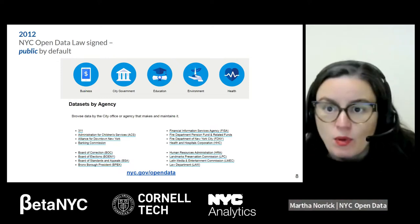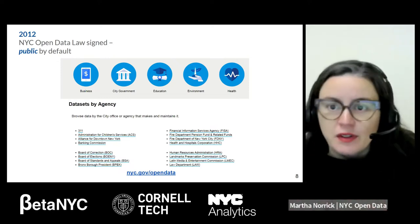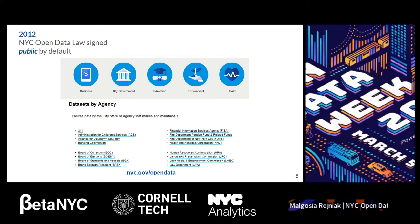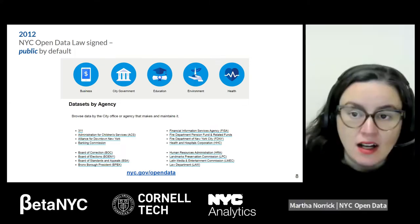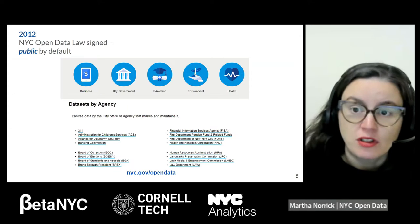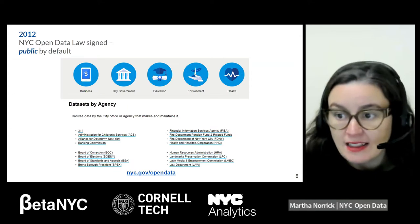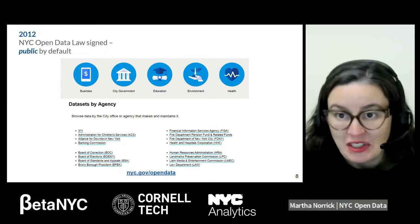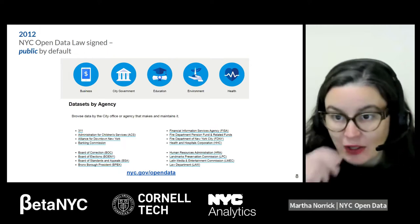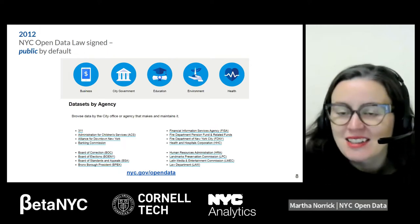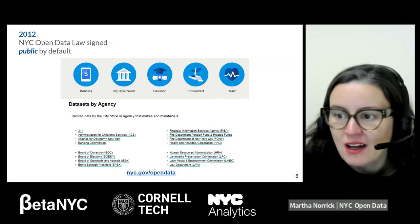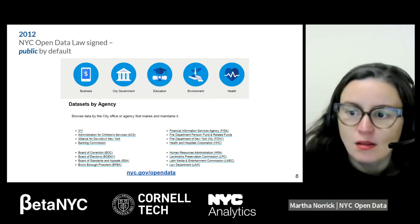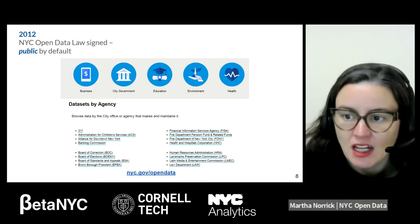There have been some laws passed since 2012 to improve and refine the open data rules, including making sure that geospatial information is available if applicable to a data set. This is all in the administrative code — there's a series of amendments to Local Law 11 of 2012, which was the law that established New York City open data.